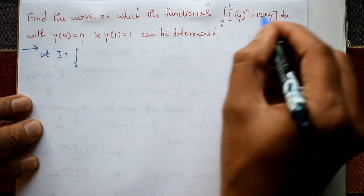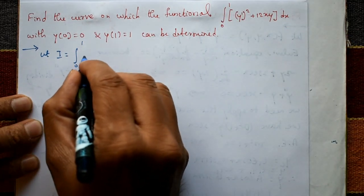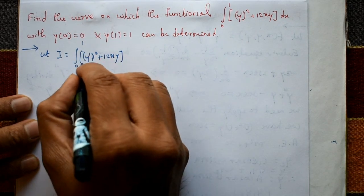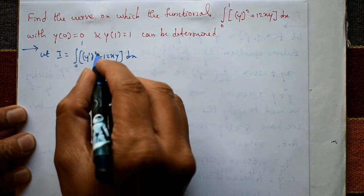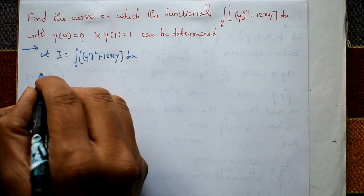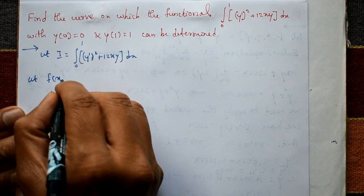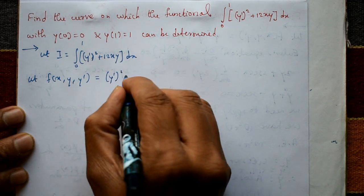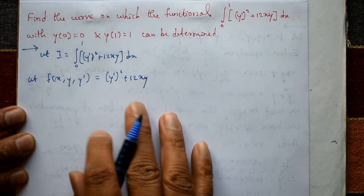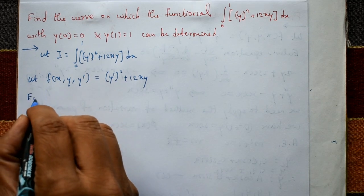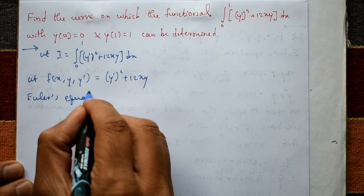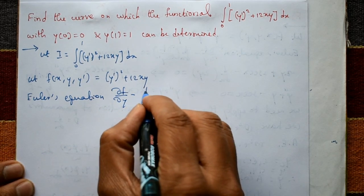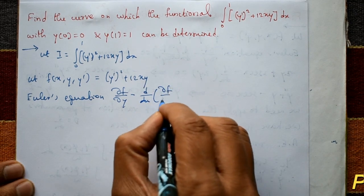I equals the integration of 0 to 1 of y' squared plus 12xy with respect to x. Consider F(x, y, y') = y' squared plus 12xy. Euler's equation becomes: the partial derivative of F with respect to y, minus d/dx of the partial derivative of F with respect to y', equals 0.